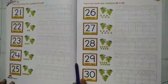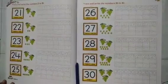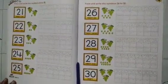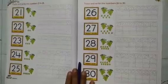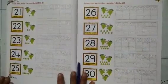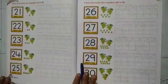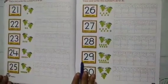1, 2, 3, 4, 5, 6, 7, 8, 9, 10, 11, 12, 13, 14, 15, 16, 17, 18, 19, 20.